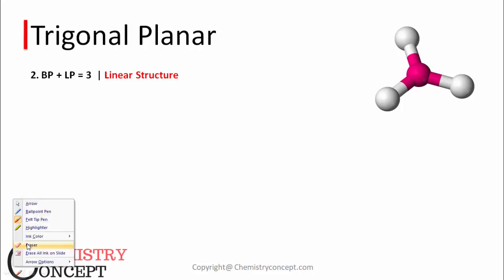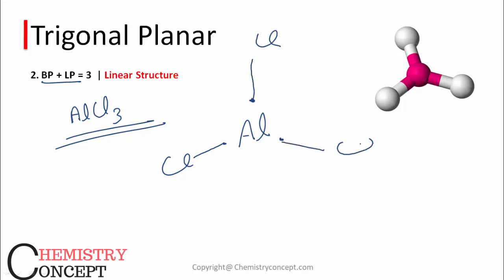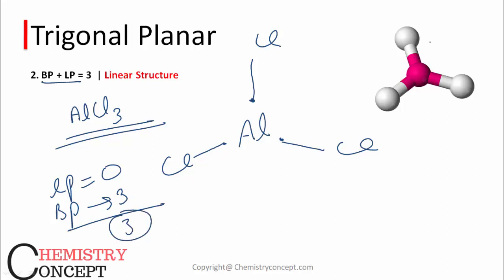Next is trigonal planar — the case when bond pair plus lone pair equals 3. Example: AlCl3. Aluminum has 3 electrons in its valence shell. When it forms 3 single bonds with 3 chlorine atoms, there is no lone pair left. Lone pair is 0, bond pair is 3. Sum is 3, so the structure is trigonal planar with a 120-degree bond angle.